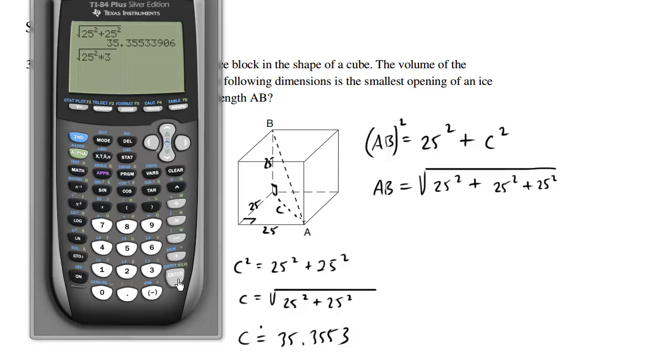And so AB equals approximately 43. So AB, the length of AB, is approximately equal to 43.301.